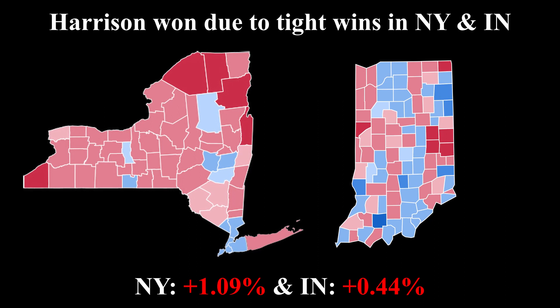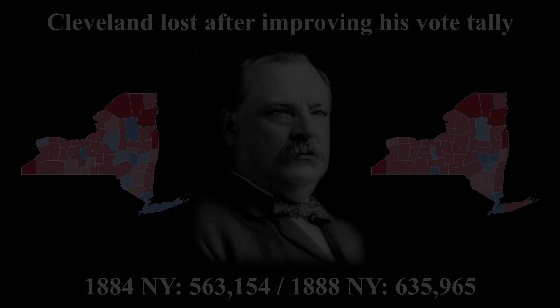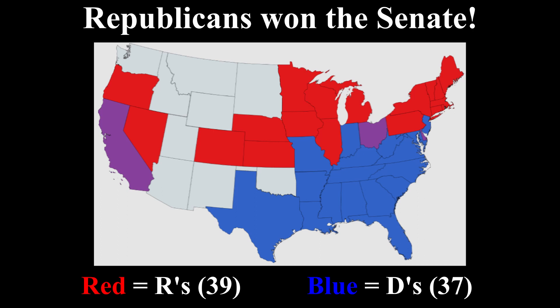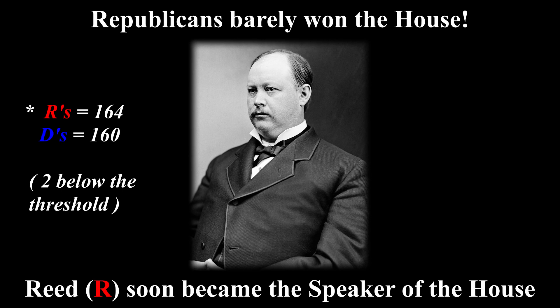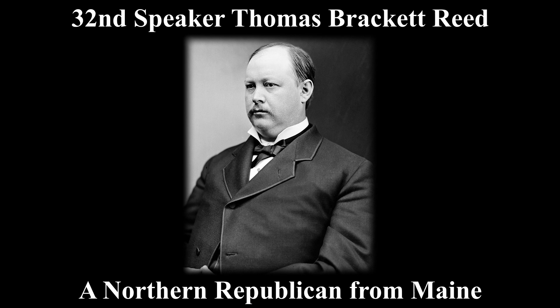In the Senate, the Republicans won, taking 39 out of 76 seats right on the threshold. For the House, the Republicans barely won, taking 164 seats, two below the threshold. Thomas Reed, a Northern Republican from Maine, soon became the 32nd Speaker of the House.